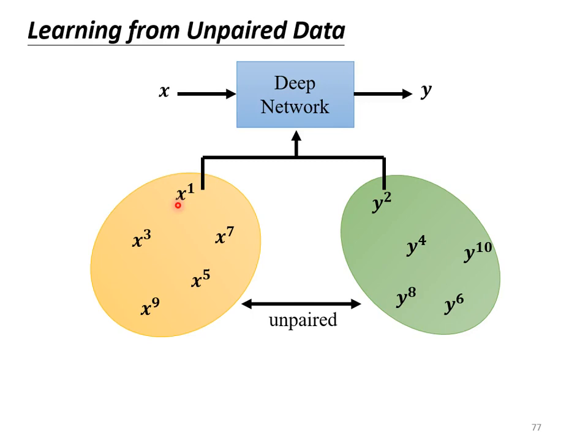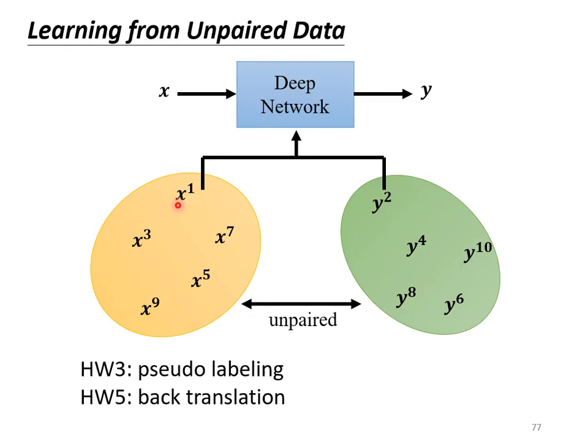As for how to use these unlabeled data, there are two examples — in homework 3 and homework 5 — on how to do semi-supervised learning with labeled data. But these methods more or less still need some paired data, whether it is the pseudo-labeling in homework 3, or the back translation in homework 5.